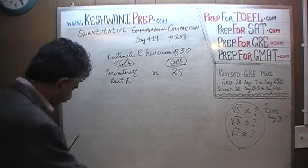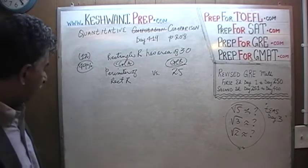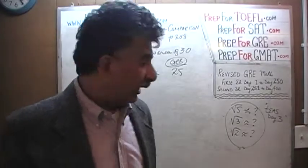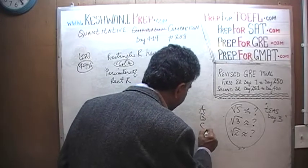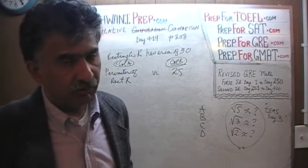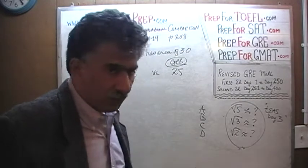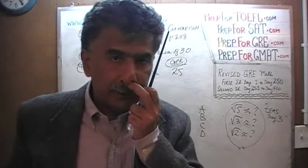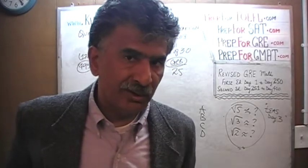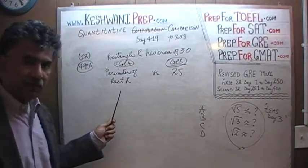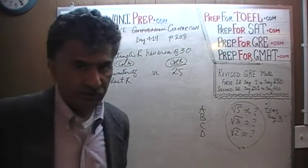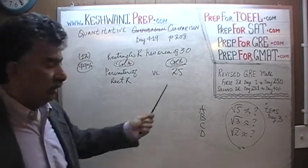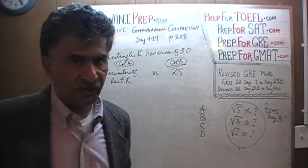Well, the reason why half the people missed this is because those people do not realize what these answer choices mean. There are four answer choices — A, B, C, and D — in the quantitative comparison question. When we pick answer choice A, what we are claiming is that the quantity in column A is always bigger. When we pick answer choice B, the claim that we are making is that the quantity in column B is always greater. "Always" is the operative word.